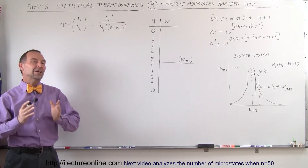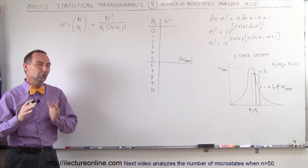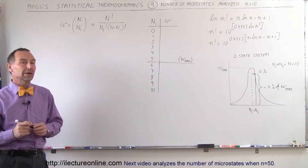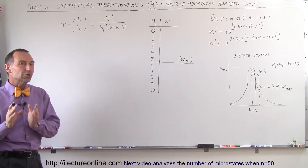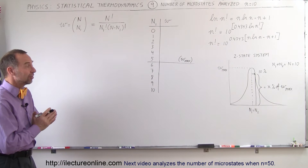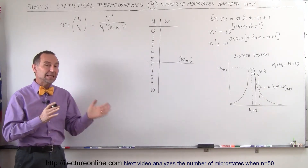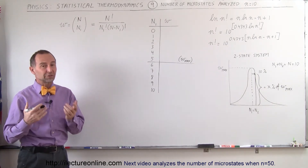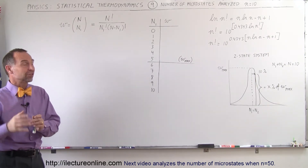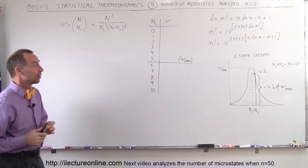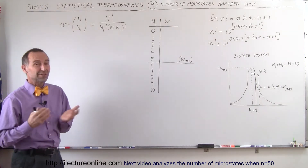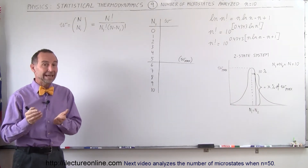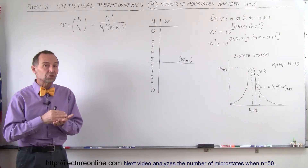Welcome to ElectronLine. Let's take a closer look at how we analyze a two-state system and calculate the number of microstates that can exist depending upon how many objects will be in one state versus the other state. For example, how many of the objects should be in one state or the other. So let's say we start off with a simple system where the total number of objects is equal to 10, and each object can be in one or the other state.